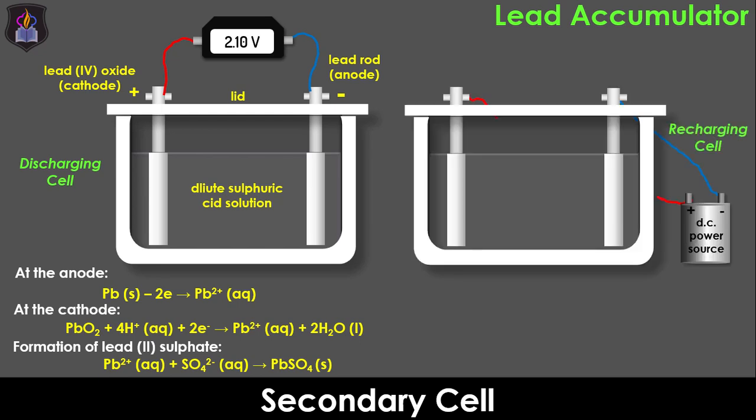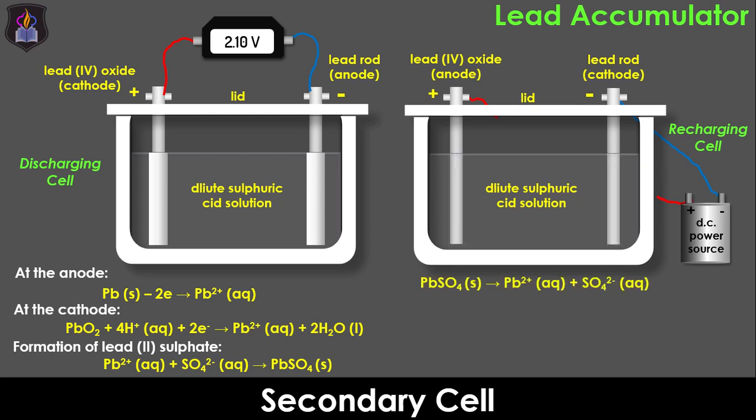During recharging, the redox reactions and roles of the electrodes are reversed because it is an electrolytic process. So the anode in the discharge cell becomes the cathode while the cathode becomes the anode. The anode and cathode of an external DC power source are connected to the cathode and anode of the discharge cell respectively. The passage of electric current to the cell causes the lead 2 sulfate deposits at the electrodes to break down into lead 2 and sulfate ions as seen on the screen.